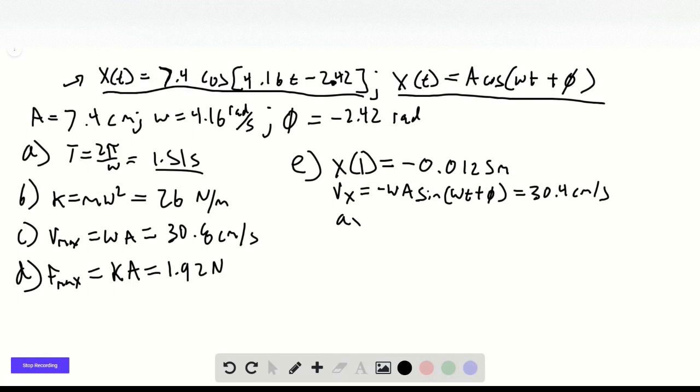A x equals negative kx over m, which also equals negative omega squared x, which equals positive 0.216 meters per second squared.